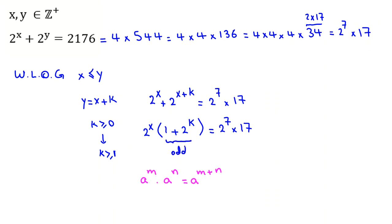This part is odd part, this part is power of 2. So we conclude the odd part: 2 to the k plus 1 equals 17. And the power of 2: 2 to the x equals 2 to the 7.